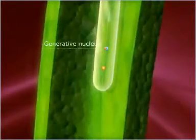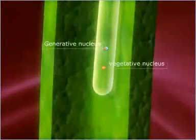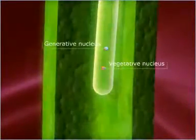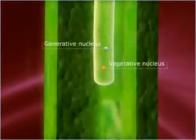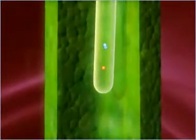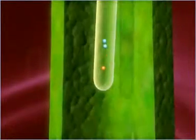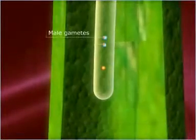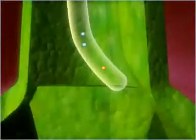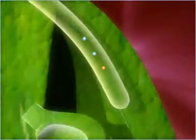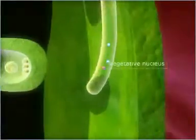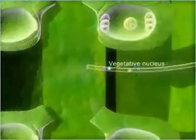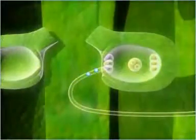The generative nucleus and the vegetative nucleus of the pollen grain move to the lower end of the pollen tube. Here the generative nucleus divides mitotically into two male gametes or sperms. The vegetative or tube nucleus is responsible for the growth of the pollen tube, and it degenerates after reaching the ovule.